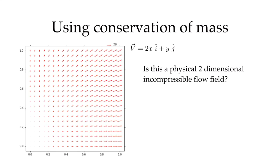Next I want to do an example using conservation of mass. This is a velocity field I just made up — I've plotted it, and I ask: is this a physical two-dimensional incompressible flow field? The clue is conservation of mass. We've already calculated the mass flow rate leaving this surface, and I can see from these velocity vectors that there is clearly mass leaving through the surface x equals one.